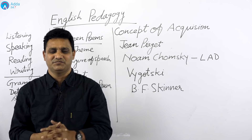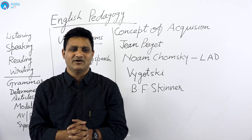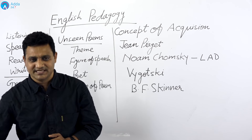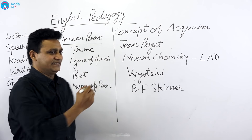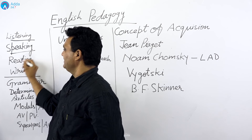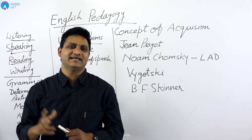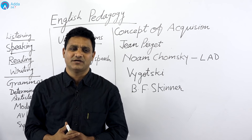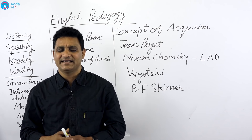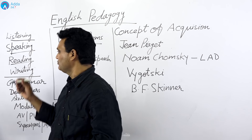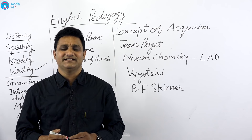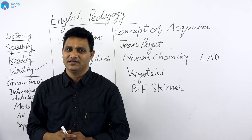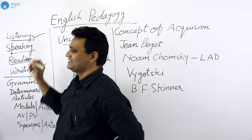English pedagogy mein saathiyon 2-3 tariqe se question puchhe jayenge. Pehla jo area hoga question ka, isme ek child ki listening, speaking aur reading ke skill ke oopar kaam karna hoga. Isme ye parts aate hain: listening, speaking, reading aur writing. Jo sabse difficult part hota hai language ka, woh writing ka part hota hai. Sabse easy ya first, child listening se start kerta hai.